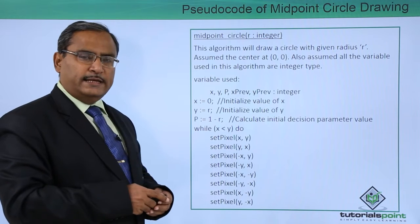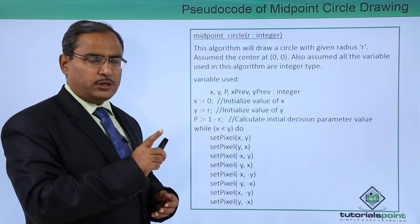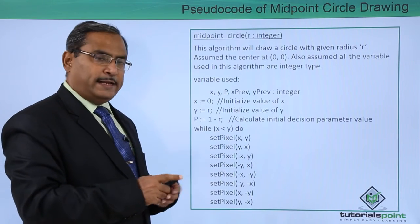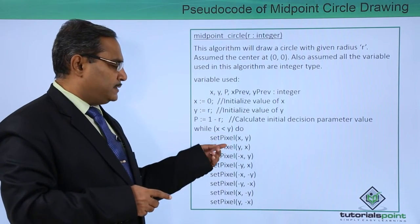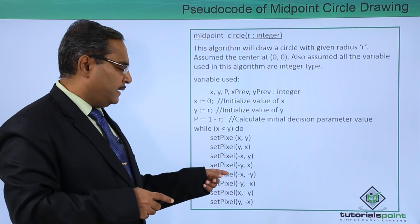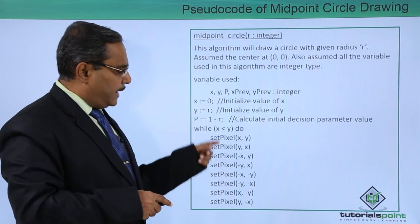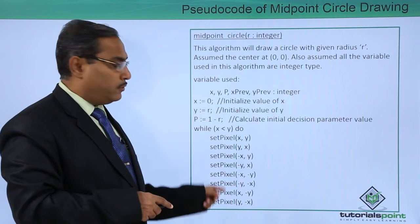While x is less than y do, that means we are drawing that portion of the circle where x is less than y. Set pixels - now here you can find 1, 2, 3, 4, 5, 6, 7, 8 different pixels to be drawn for 8 octants.